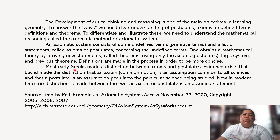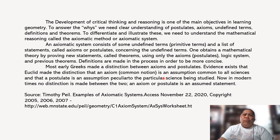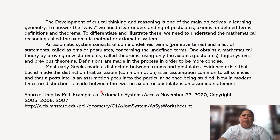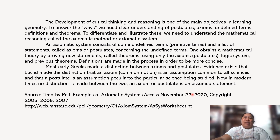Most early Greeks made a distinction between axioms and postulates. Evidence exists that Euclid made the distinction that an axiom or common notion is an assumption common to all sciences, and that a postulate is an assumption peculiar to the particular science being studied. Now, in modern times, no distinction is made between the two. An axiom or postulate is an assumed statement.